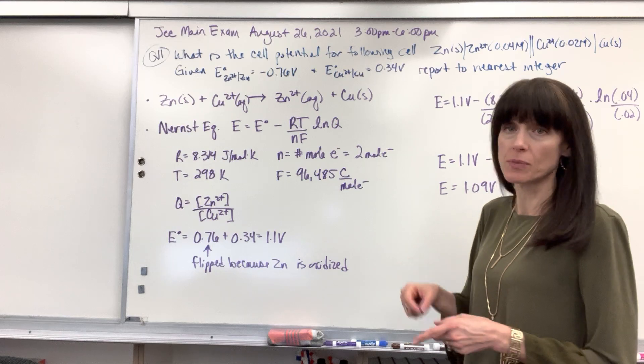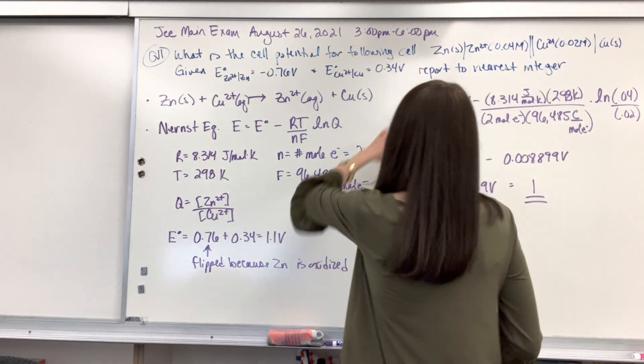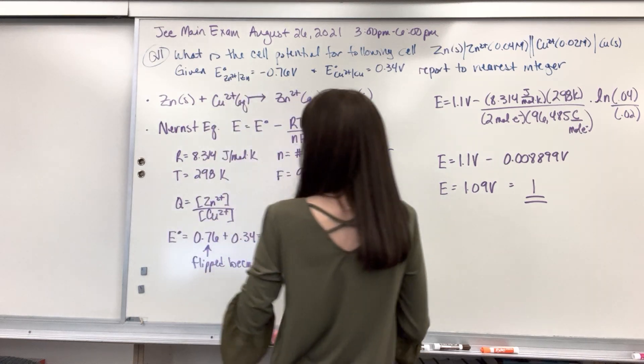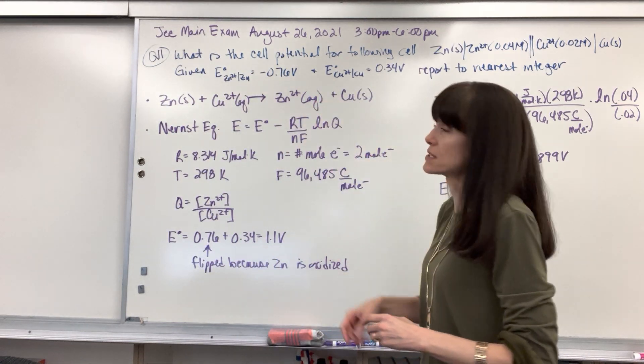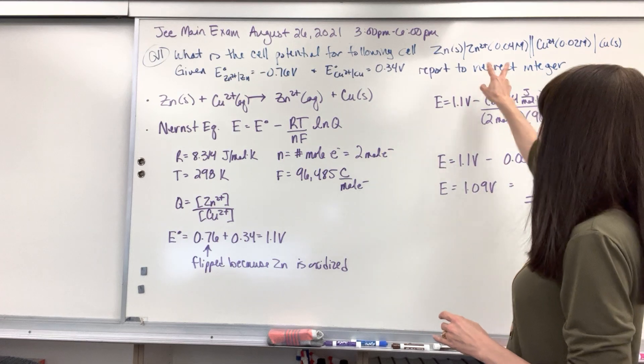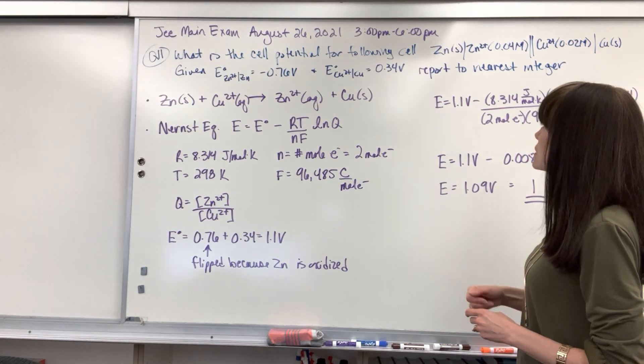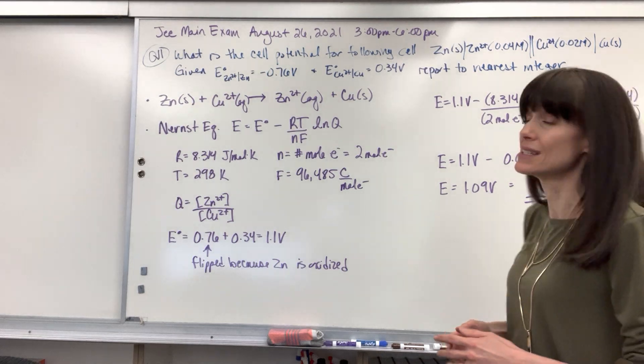It's question 11. It says, what is the cell potential for the following cell? They give us the battery notation on this particular cell and the standard reduction potentials for both species in the reaction. It wants us to report this cell potential to the nearest integer.